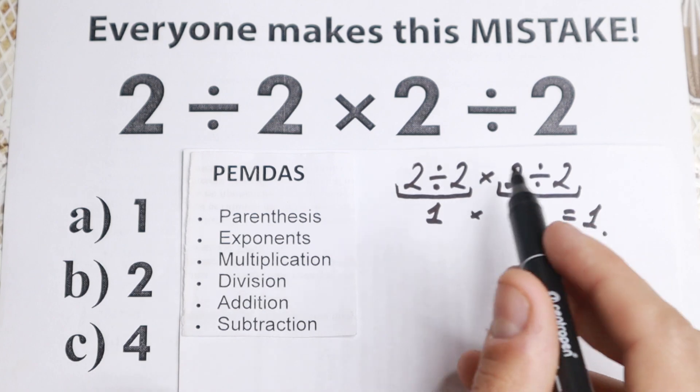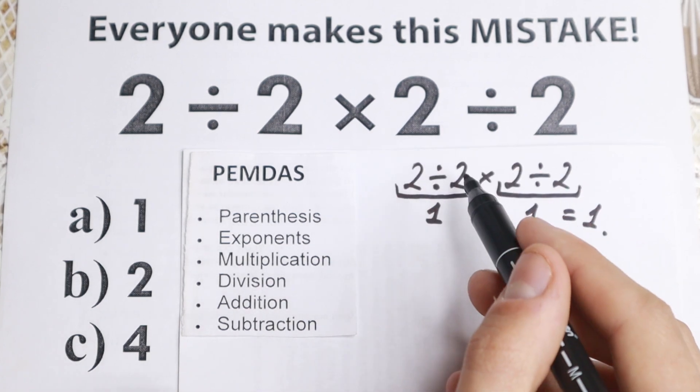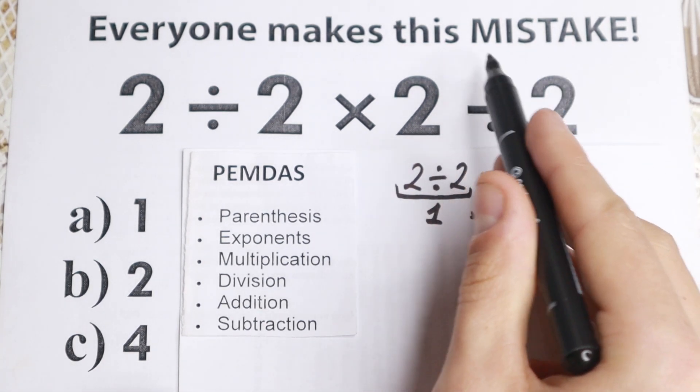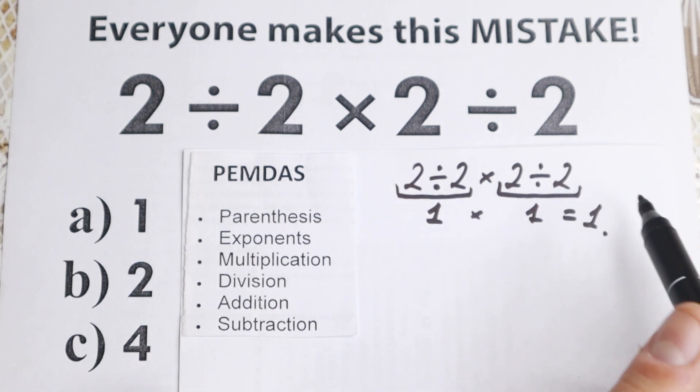The first one is parentheses. Are there any parentheses right here? No, I don't see any of those, we don't have any parentheses, which is really great. Next step, exponents right here. Are there any exponents, squares, cubes right here? No, I don't see any of those, which is really great as well.